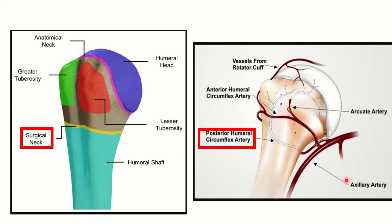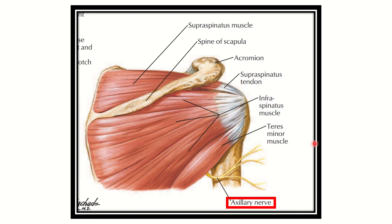This vessel arises from the axillary artery — specifically from the third part of the axillary artery. The third part of the axillary artery gives three branches: the subscapular artery, and the anterior and posterior circumflex humeral arteries.